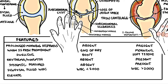Blood tests are also a good differentiator. In osteoarthritis, inflammatory markers such as C-reactive protein and erythrocyte sedimentation rate are normal, whereas in rheumatoid arthritis they are elevated, and obviously more elevated during a flare.